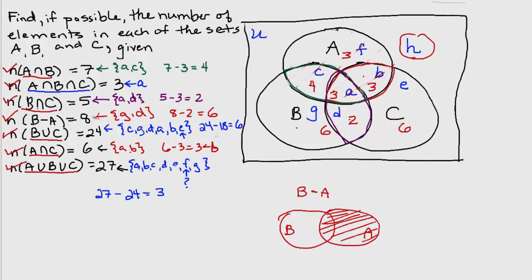do we need region H in order to answer the question? No, because we were asked how many are in A and B and C. The number in set A is going to be 4 plus 3 plus 3 plus 3. So let's see, that's going to be 7 plus 6 is 13. The number in set B is going to be 2 plus 3 plus 4 plus 6, which gives us 15. And the number in set C is going to be 2 plus 3 plus 3 plus 6, which would be 14.